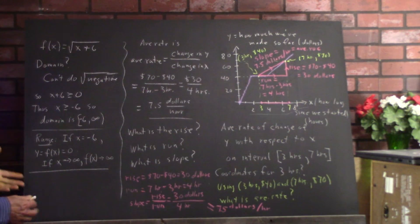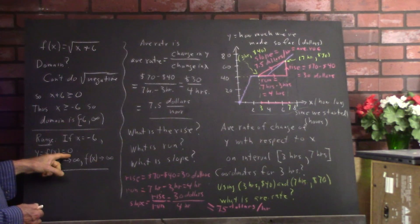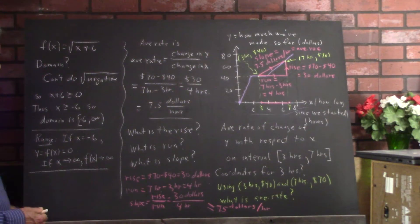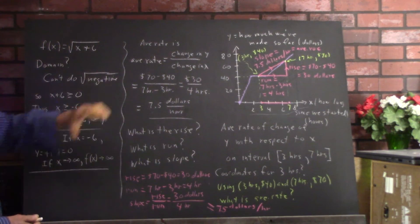Okay, now my verbal argument pretty much establishes if x is negative 6, we get 0. If x approaches infinity, f approaches infinity. As x gets bigger, this number gets bigger. It's continuous.